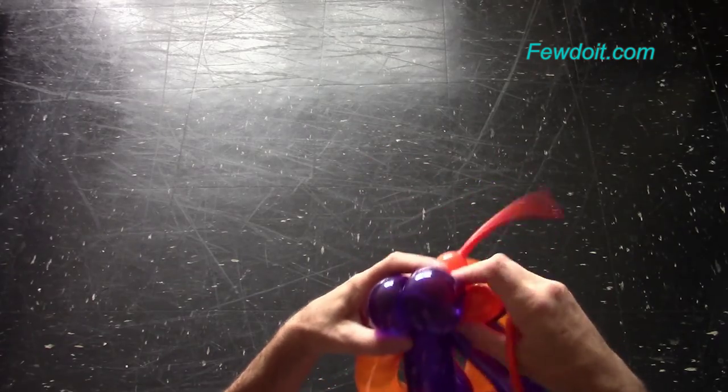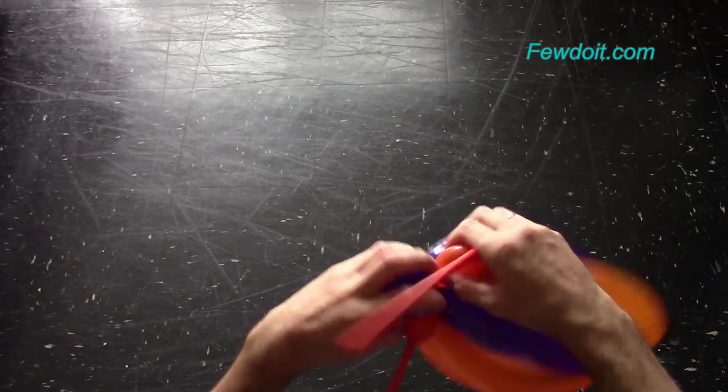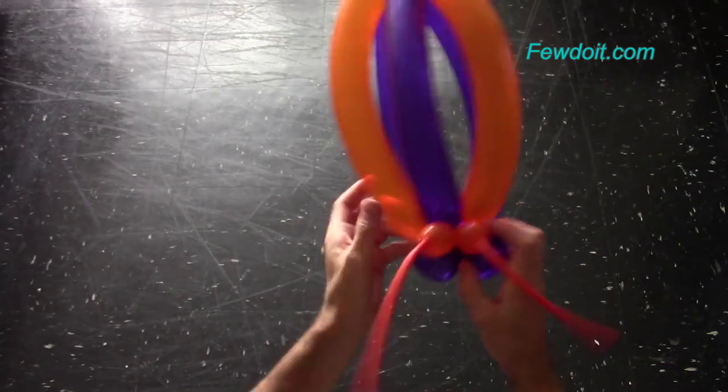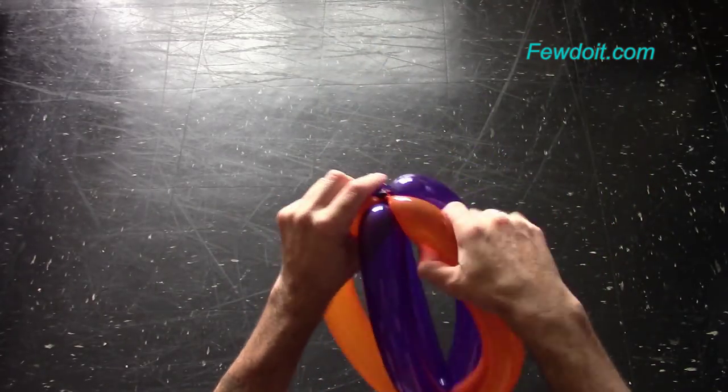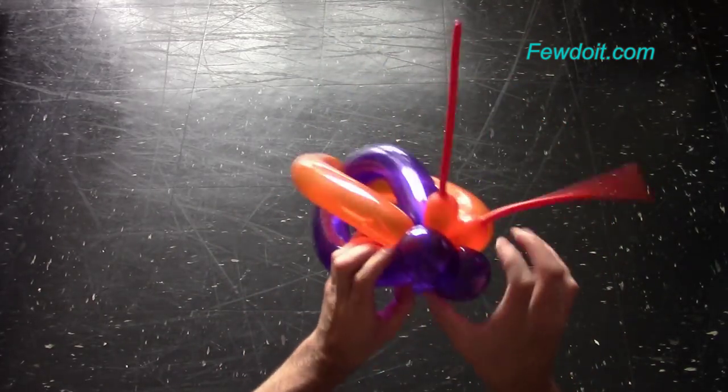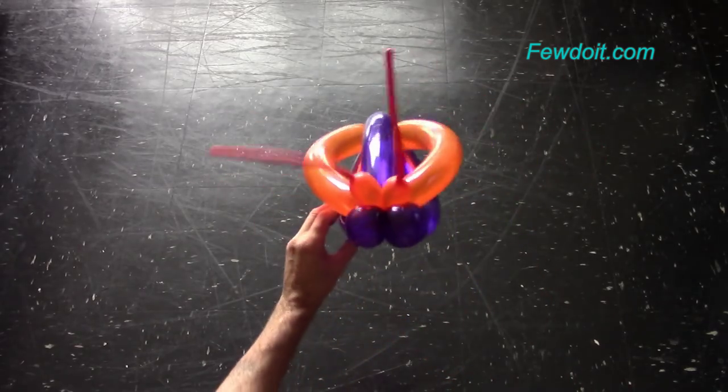Work both orange balloons in the same way, making bubbles of the same size. Basically we already made the Bach head. The rest of the orange balloons we can leave as it is, use it as antennas.